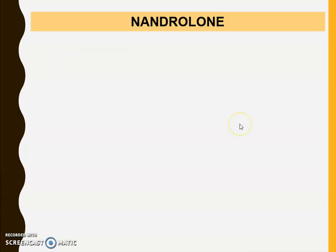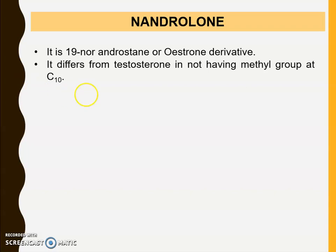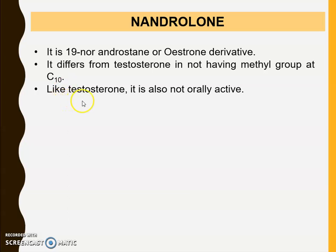The next drug is Nandrolone. Nandrolone is an example of a 19-nor-androstene or estrogen derivative. This means that at position 19 there is an absence of a methyl group in the steroidal derivative. It differs from testosterone in lacking the methyl group at that position. Like testosterone, it is also not active orally.